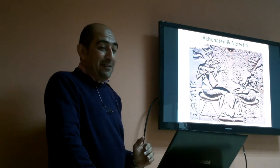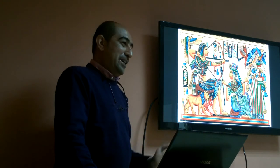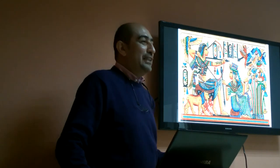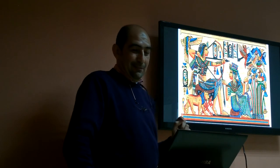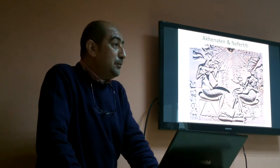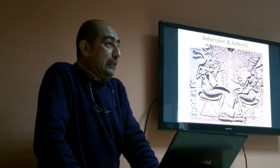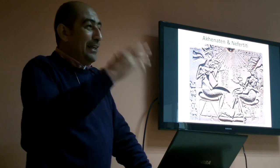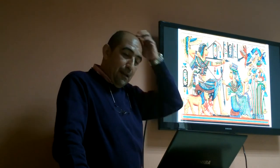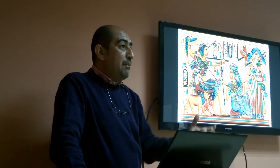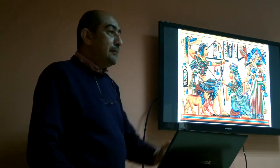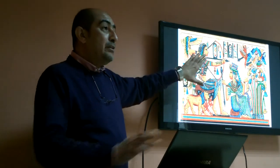Akhenaten and Nefertiti were the parents of another very famous king. His name was originally Tutankhaten — named after the god Aten. He was only nine years old when he became pharaoh. Under pressure from the priests of Amun, he changed his name to Tutankhamun, changed religion back to the worship of Amun, and became known by that name. If we translate the name, it means 'the living image of the god Amun' — originally it was 'the living image of the god Aten.'